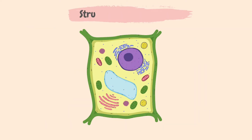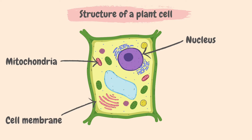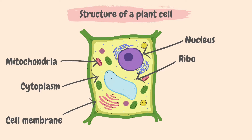Next, we'll look at the plant cell. The parts of the animal cell that were mentioned previously are also present in the plant cell: the nucleus, the mitochondria, the cell membrane, the cytoplasm, and ribosomes.